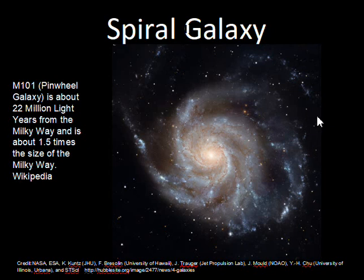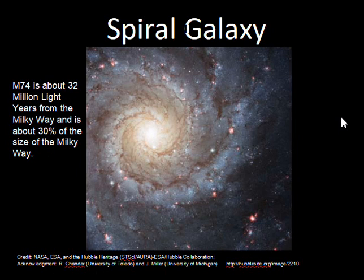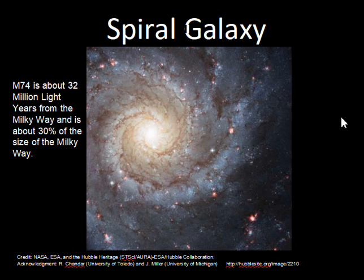M101, the Pinwheel Galaxy, has spiral arms that are a little more spread out, and it has a larger diameter than the Milky Way galaxy. NGC 3982 is another example of a spiral, smaller than the Milky Way. M74 is also smaller than the Milky Way and has a nice spiral structure.